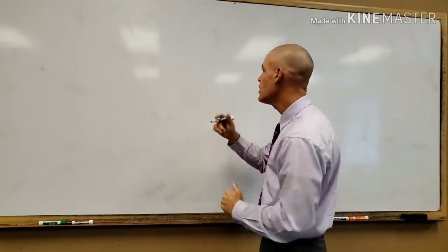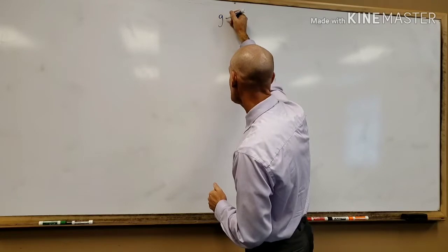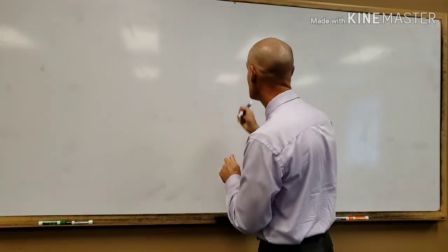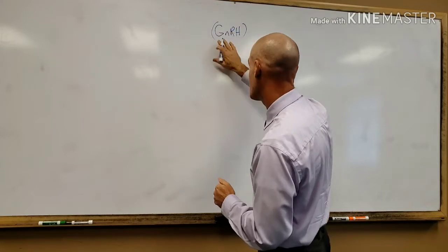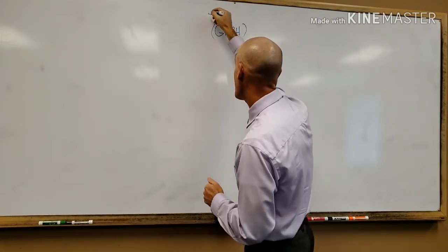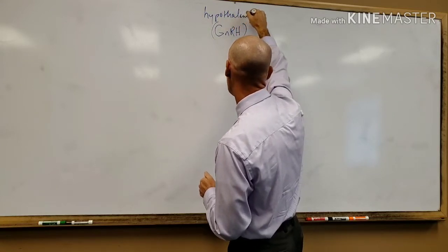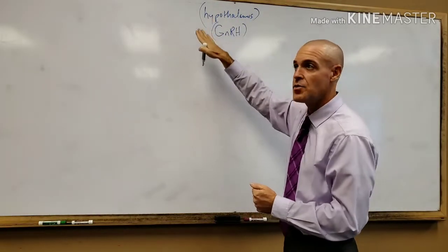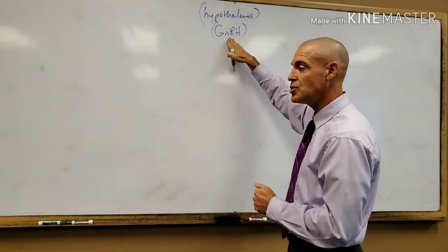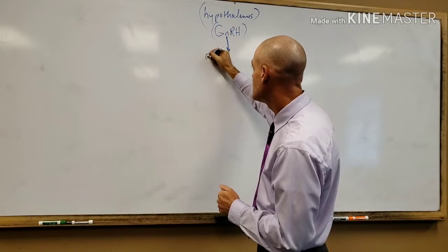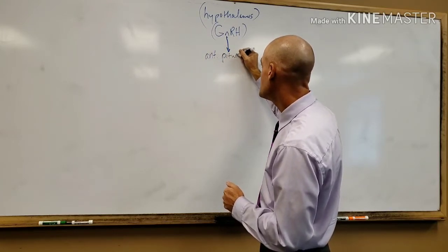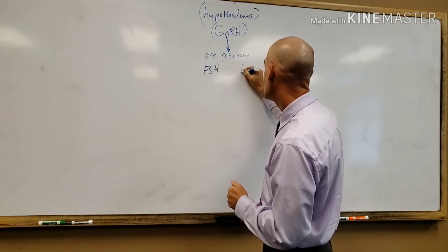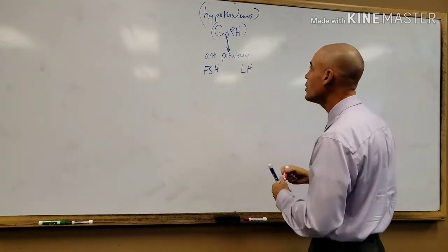We're going to start with a hormone called GnRH, which stands for gonadotropin releasing hormone, and that comes from the endocrine gland referred to as the hypothalamus. GnRH is going to stimulate the anterior pituitary to release FSH and LH. So these are the hormones we're dealing with.